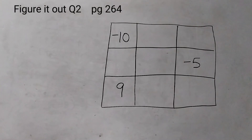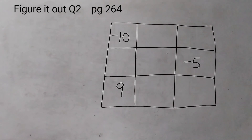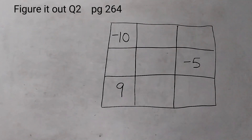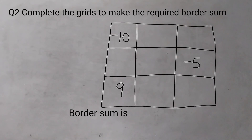Hello students, welcome back to Rosy Maths class. In today's video we shall do question number 2 given on page number 264 of Ganit Prakash. This is for class 6, last chapter: 'The Other Side of 0'. Question number 2 has 3 grids that we are going to solve. The question is: complete the grids to make the required border sum.